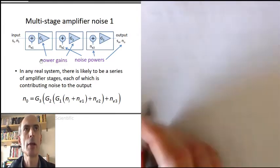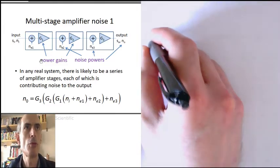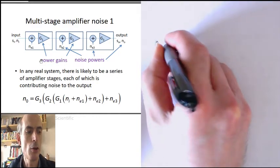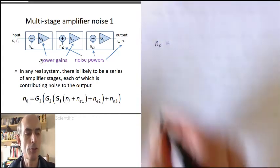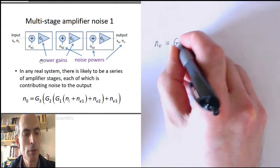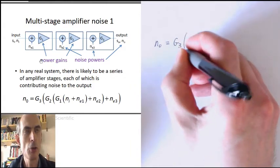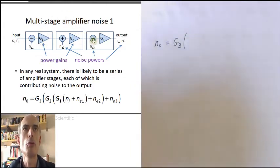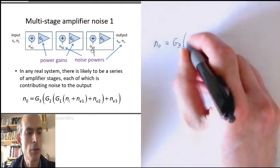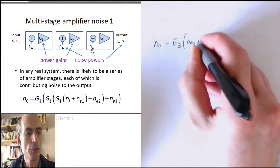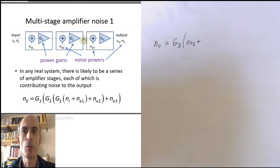Then what's the total output noise? The output noise is the gain of the third stage multiplied by the input noise to the third stage. The input noise to the third stage is the equivalent input noise, Ne3, plus the noise that comes out of the second stage.